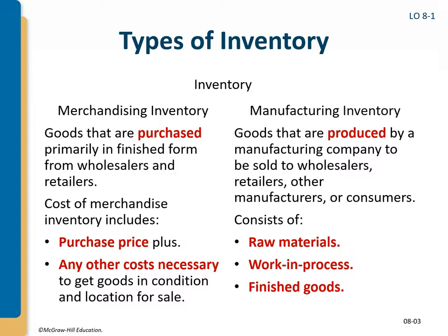There are two major types of inventory systems depending on the type of company. A merchandising company, which is what we're going to mainly focus on, only has one inventory account, because they purchase finished goods from wholesalers and retailers and resell them to their customers. The amount in our merchandise inventory asset account will be the actual purchase price of the inventory plus any other cost necessary to get goods in the condition and location for sale.